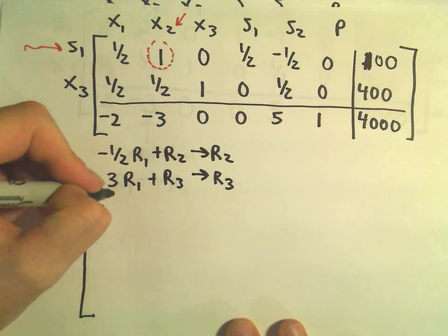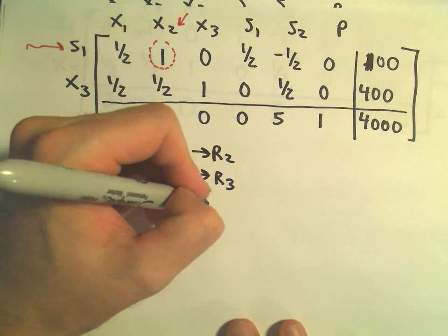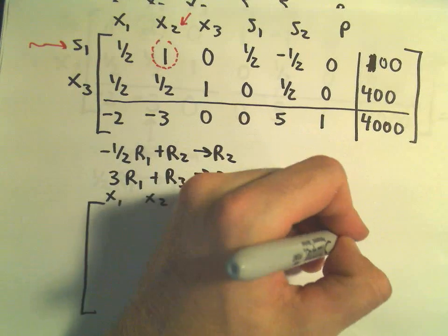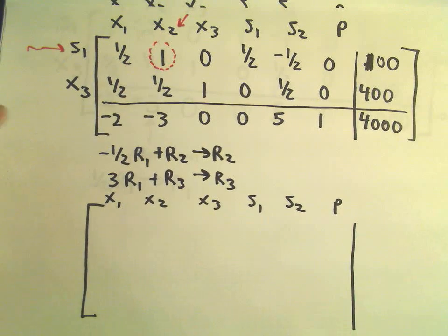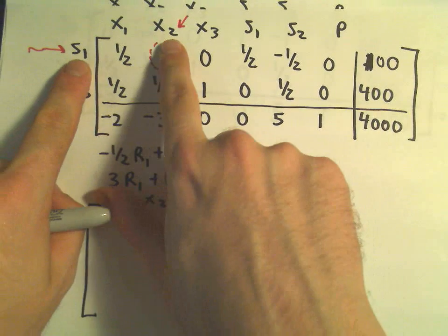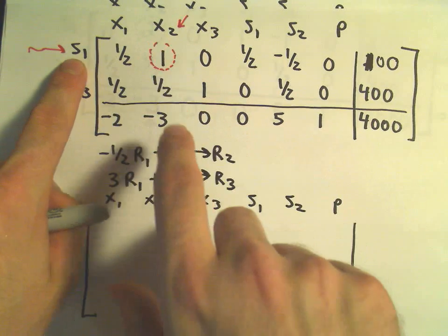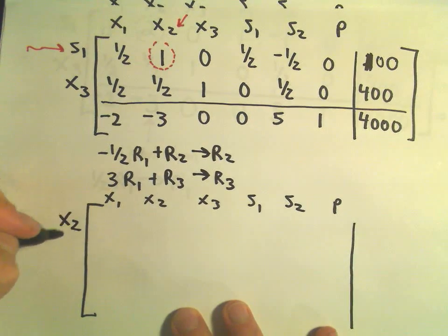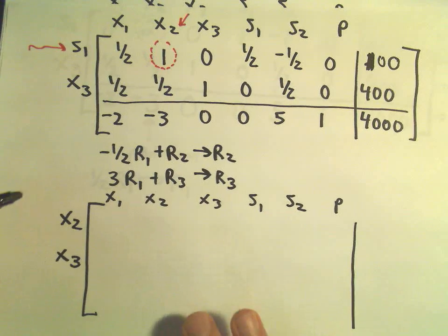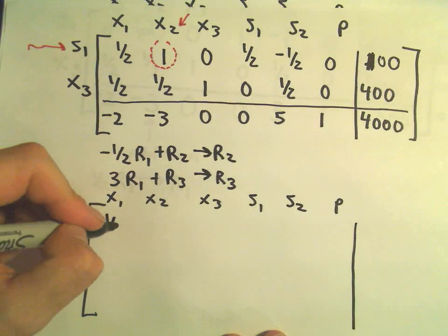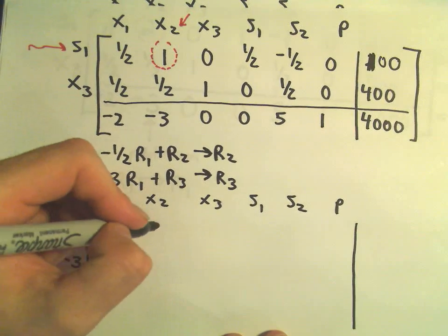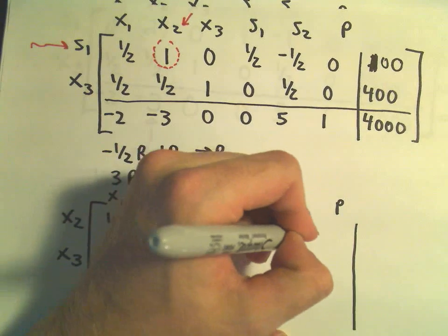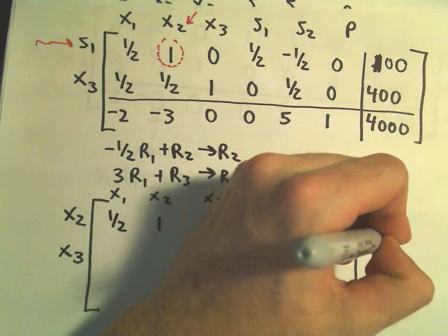We've got X1, X2, X3, S1, S2, P. I'm going to go ahead and switch these out — my S1 is going to turn into an X sub 2. We've still got X sub 3. The first row we're going to leave alone: one-half, 1, 0, one-half, negative one-half, 0, and 100.